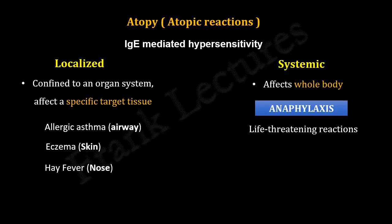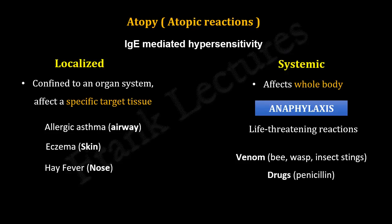Anaphylaxis is often a shock-like and fatal state that occurs within minutes of exposure to an allergen. The reaction is manifested within 2–4 minutes of exposure and involves airway obstruction and circulatory collapse. Antigens that trigger this type of reaction in susceptible individuals include venom from bee, wasp, and ant stings, drugs such as penicillin, and foods such as seafood and nuts.